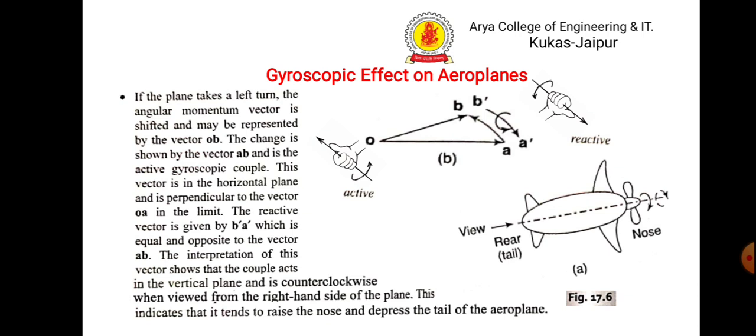It means it will go from OA to OB. The active couple will be from A to B, but the reactive couple will be B dash to A dash. So, according to the right hand rule, what will happen? Your thumb is B dash to A dash.